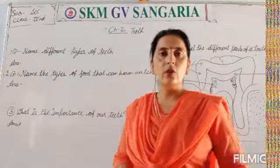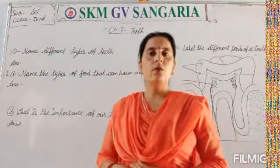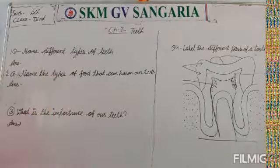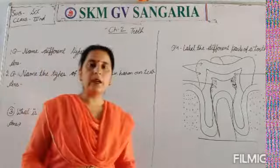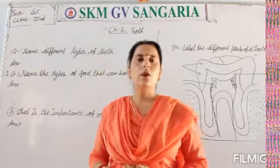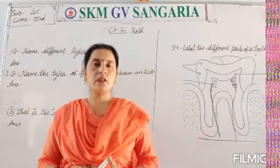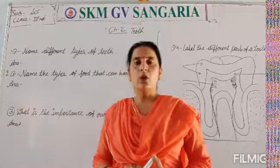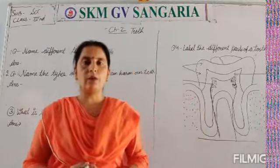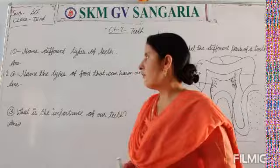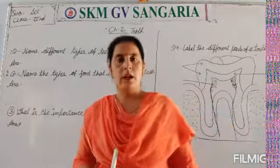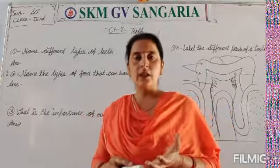In the previous video we discussed true-false and match the following. Now we are going to do questions. Our first question is: name the different types of teeth. As we discussed earlier, according to their shape and the action they perform, we can classify teeth into four types: incisors, canines, premolars, and molars.